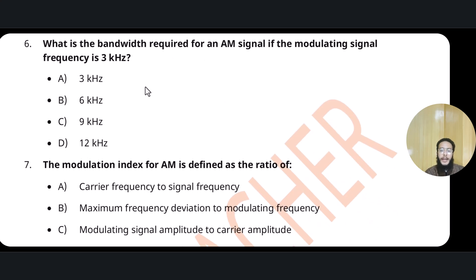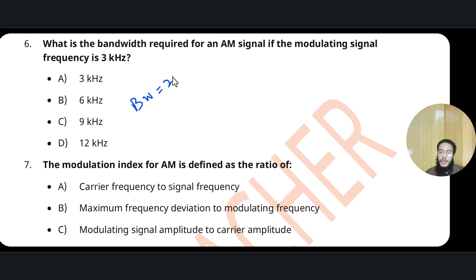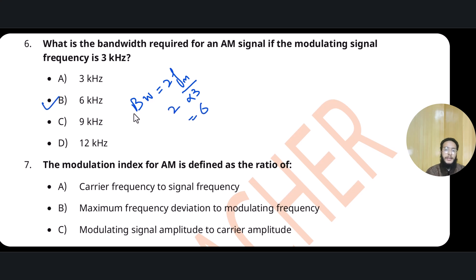Question 6: What is the bandwidth required for an AM signal if the modulating frequency is 3 kHz? The formula for bandwidth in amplitude modulation is: bandwidth = 2 × modulating frequency. So here, 2 × 3 = 6 kHz. Option B will be the correct answer.